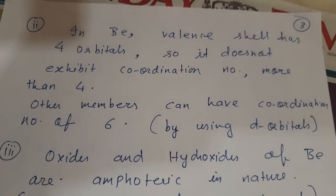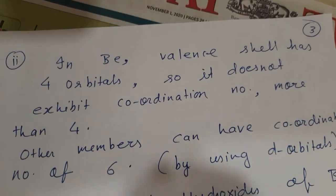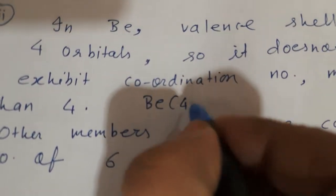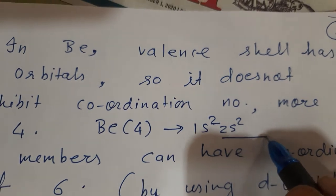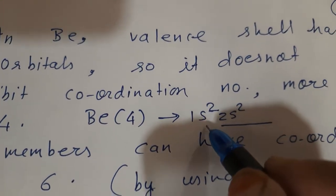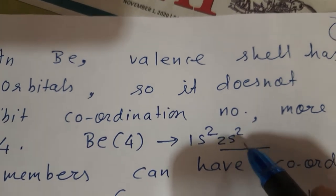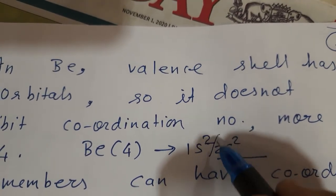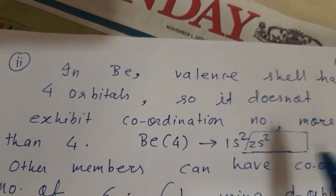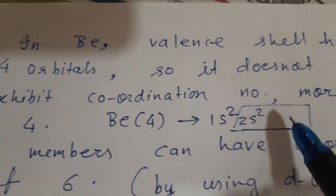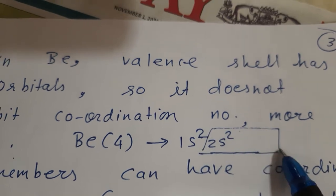In beryllium, the valence shell has only 4 orbitals (one 2s and three 2p), so it does not exhibit a coordination number more than 4 — it cannot go beyond P orbitals since there are no d orbitals in the second period. Whereas other members can have a coordination number of 6 by using d orbitals, which start from the third period.